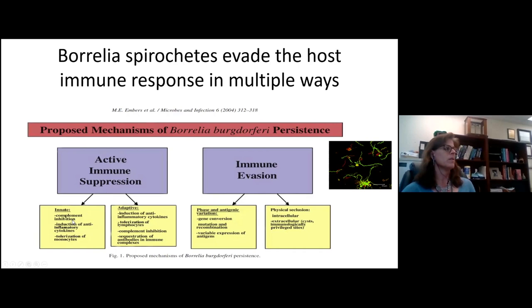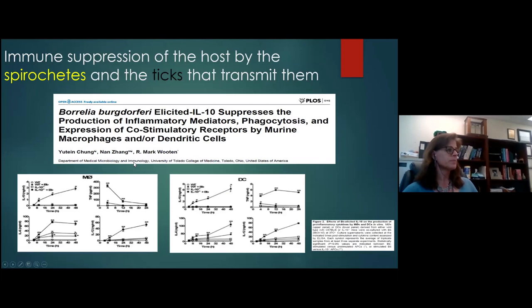There are many different proteins that inhibit complement. Borrelia can induce anti-inflammatory cytokines, tolerize monocytes, and possibly sequester antibodies in immune complexes. IL-10 is a potent anti-inflammatory cytokine, and when macrophages or dendritic cells are presented with Borrelia, they produce high levels of IL-10. But in the absence of IL-10, such as in IL-10 knockout mice, levels of IL-6, TNF-alpha, and IL-12 are all elevated, which would recruit other cells to the site of infection. By inducing IL-10, Borrelia has the ability to dampen that response.